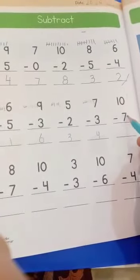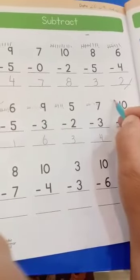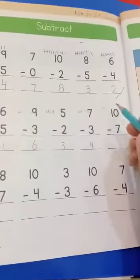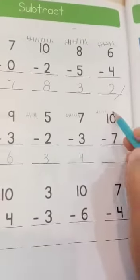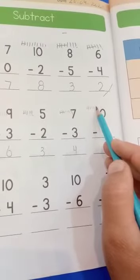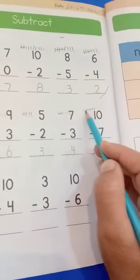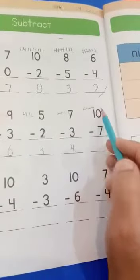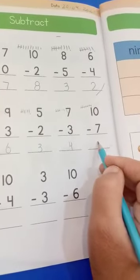10 minus 3: 1, 2, 3, 4, 5, 6, 7, 8, 9, 10. Cut 7 lines: 1, 2, 3, 4, 5, 6, 7. Write down over here, 3.